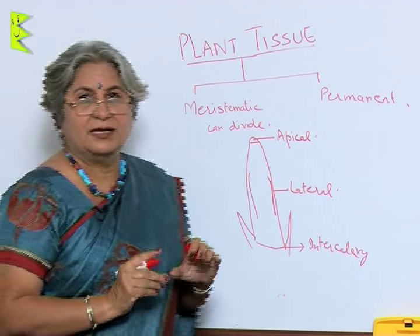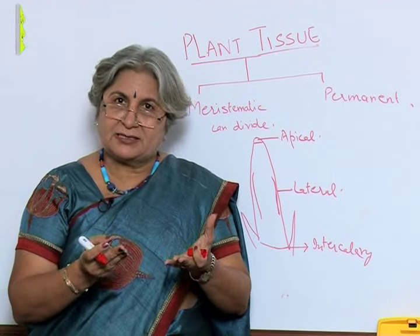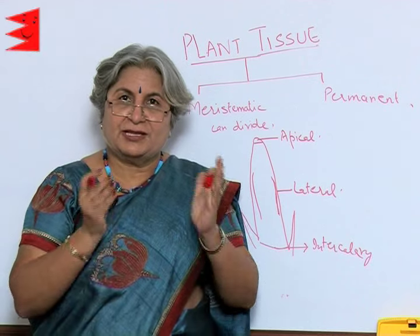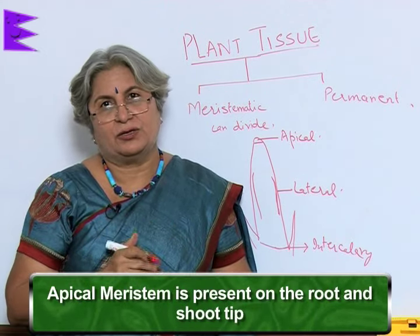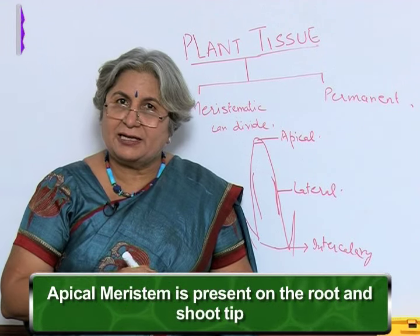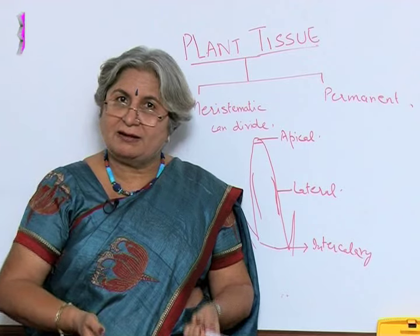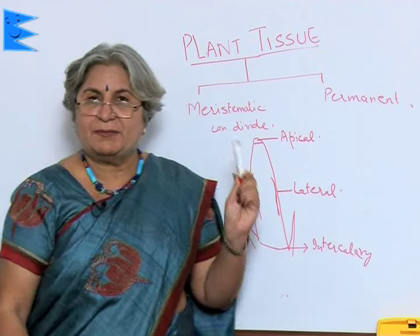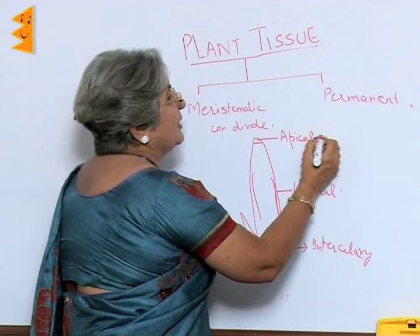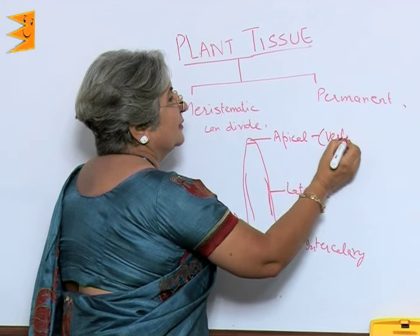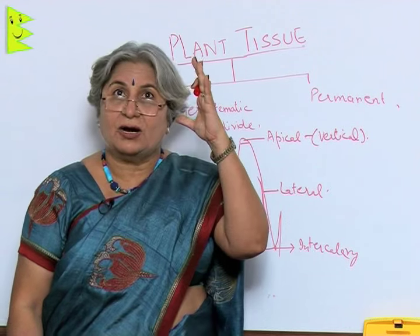The word apical means apex or tip, so the apical meristem is present on the root and shoot tip. If you cut the tips, growth stops. The kind of growth it provides is vertical, so the apical meristem is concerned with vertical growth.